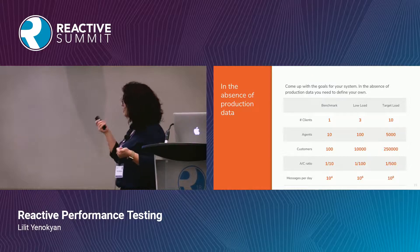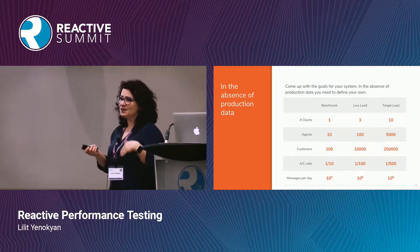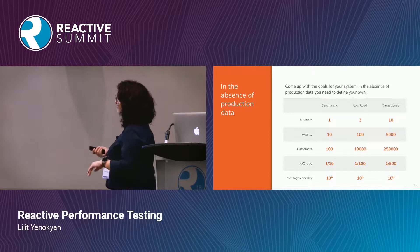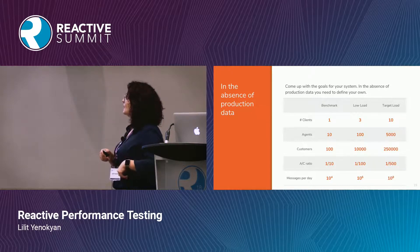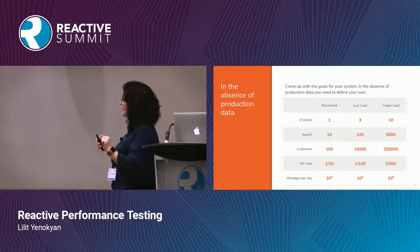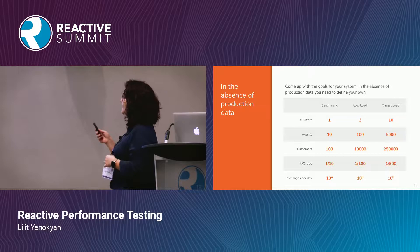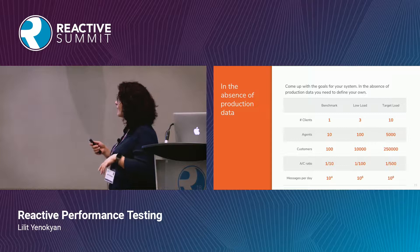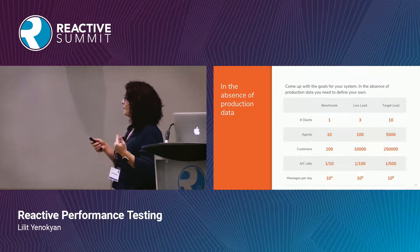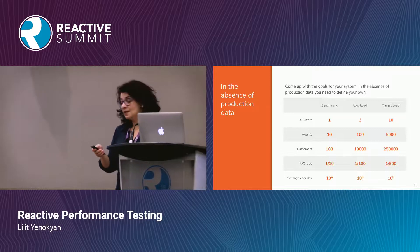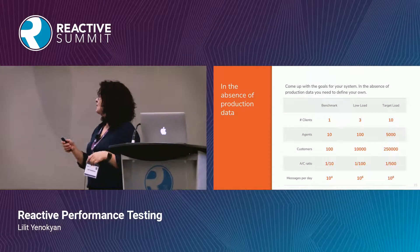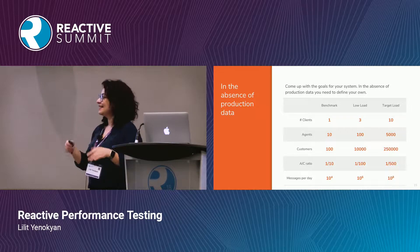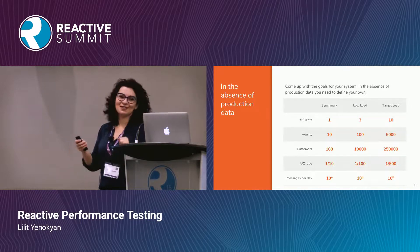We want to come up with these numbers before we start designing the performance tests, and I'd make a case for doing this before or during the implementation of the microservices. We came up with a benchmark just used for development of the tests — it's not real data. Then the low load is the pessimistic case: three clients, each being a bank, with 100 agents, 1,000 customers, and a million messages per day. Then a target load is the realistic load we really wanted to strive for, and there will be higher targets as you make more progress.